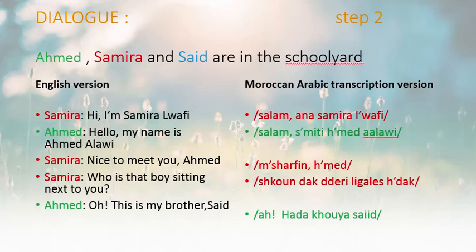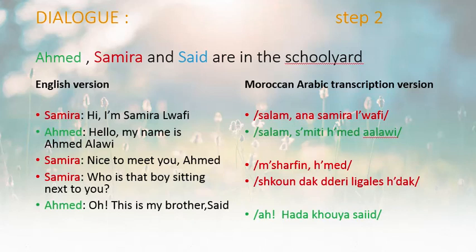Now let's move to step number two — Dialogue. Ahmed, Samira, and Saeed are in the schoolyard. Samira: 'Hi, I am Samira Alwafi' → 'Salam, Ana Samira Alwafi.' Ahmed: 'Hello, my name is Ahmed Alawi' → 'Salam, Ismiti Ahmed Alawi.' So hello and hi are the same in Moroccan Arabic — 'Salam.' 'My name is' → 'Ismiti.' Samira: 'Nice to meet you, Ahmed' → 'Salam.'